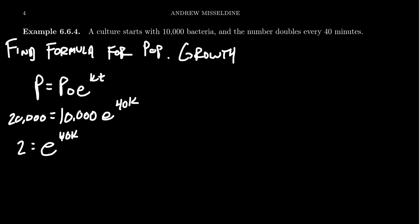So if we want to keep going to solve for k, we probably have to take the natural log on both sides, take the natural log of 2, because the natural log will cancel out the base e you have right there. You get 40k. And so therefore, k equals the natural log of 2 divided by 40.